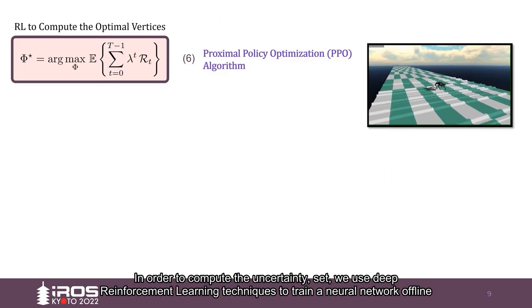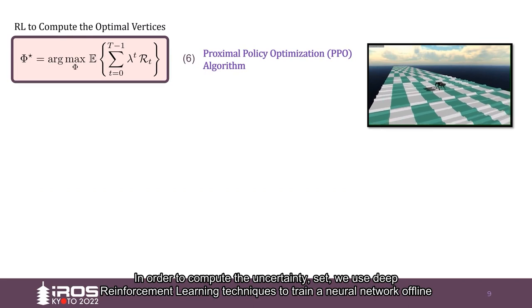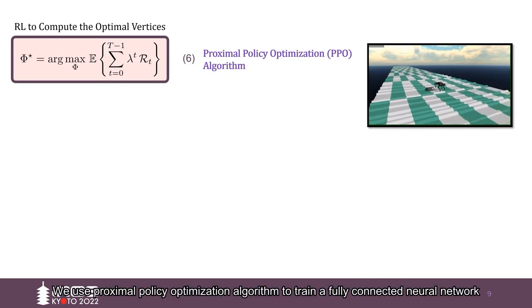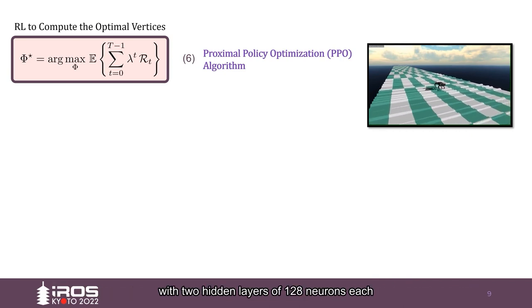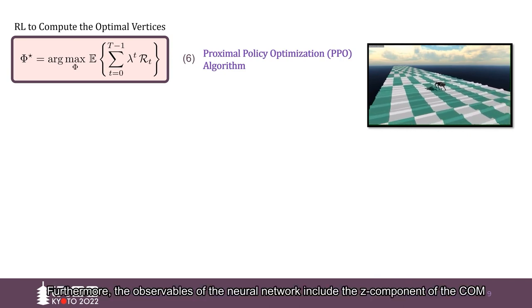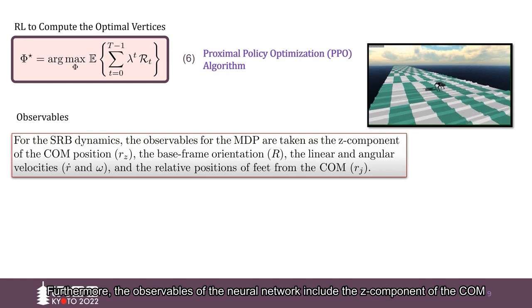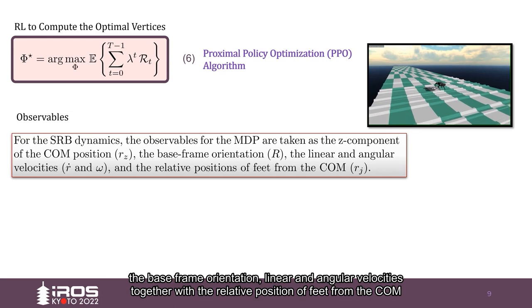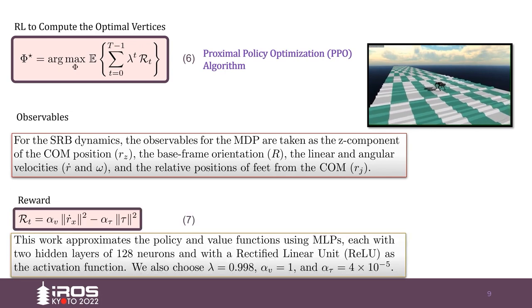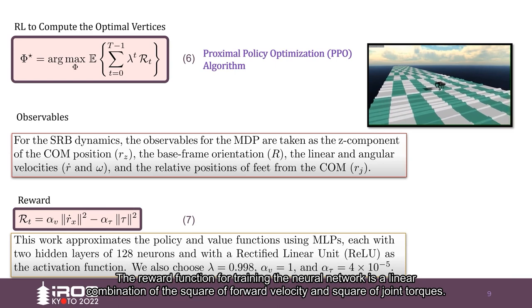In order to compute the uncertainty set, we use deep reinforcement learning techniques to train a neural network offline. We use proximal policy optimization algorithm to train a fully connected neural network with two hidden layers of 128 neurons each. Furthermore, the observables of the neural network include the Z component of the center of mass, the base frame orientation, linear and angular velocities, together with the relative position of feet from the center of mass. The reward function for training the neural network is a linear combination of the square of forward velocity and the square of joint torques.